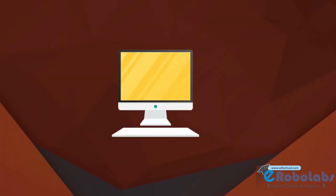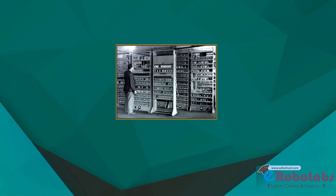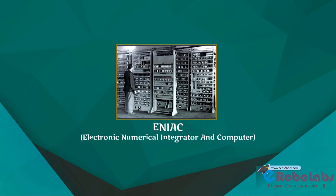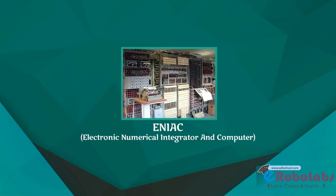As time passed, the need for more suitable and reliable machines grew, which could perform work more quickly. During this time, in the year 1946, the first successful electronic computer called ENIAC was developed, and it was the starting point of the current generation of computers. There are totally five computer generations known till date.